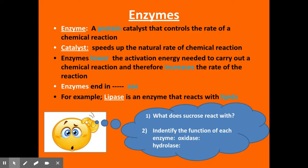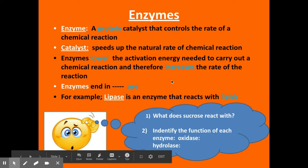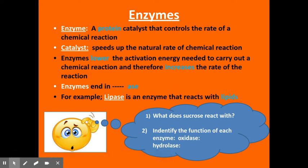A catalyst is a substance that speeds up the rate of a chemical reaction. In all chemical reactions, there is what's called activation energy — the amount of energy required to start a chemical reaction. Just like it takes energy or gas to start a car, you need a threshold of energy to start a chemical reaction. Enzymes are catalysts that lower the amount of activation energy needed to actually get the chemical reaction started.